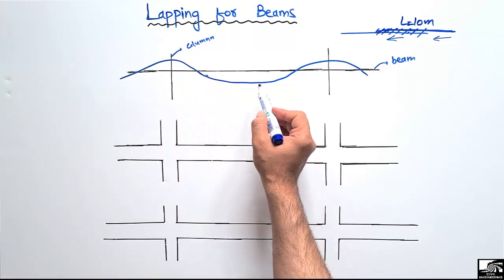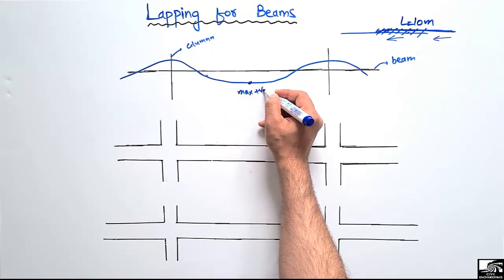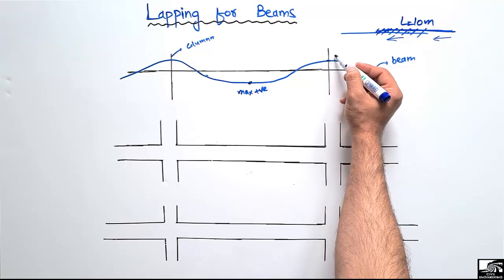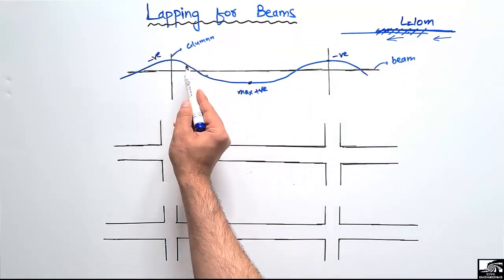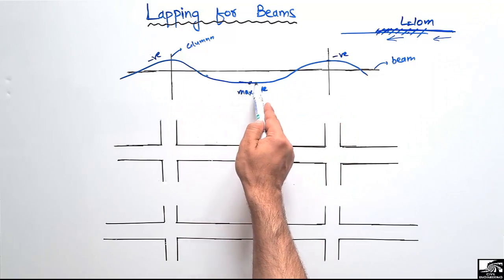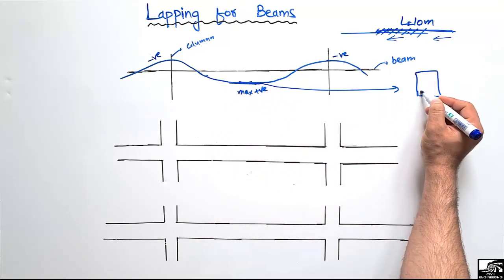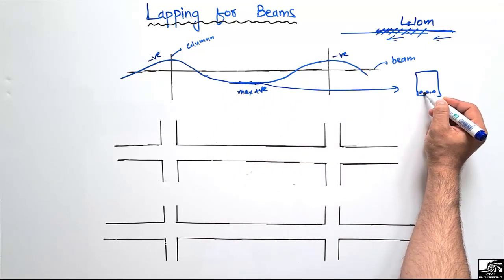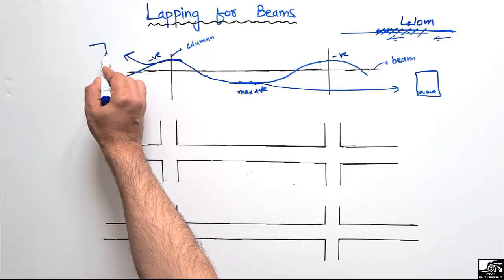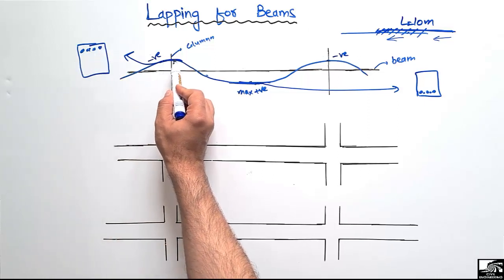We can see that the maximum bending moment will be at the mid portion of the beam — there will be a maximum positive bending moment. At the column sections, there will be negative bending moment at both ends of the beam. At the mid portion we provide reinforcement at the bottom of the beam to resist the tensile stresses.